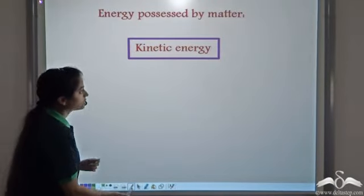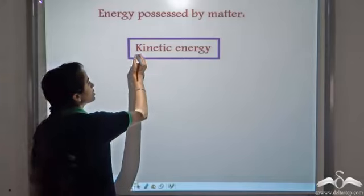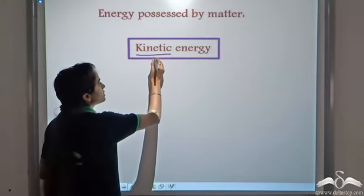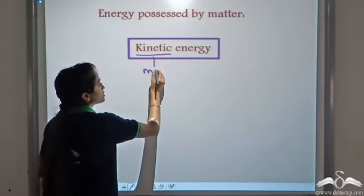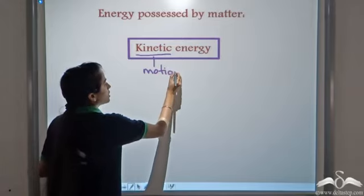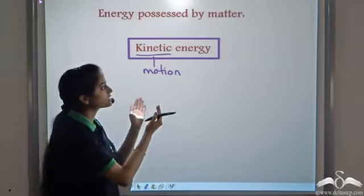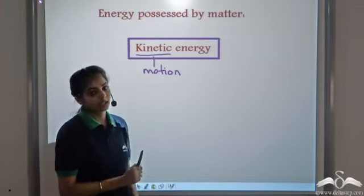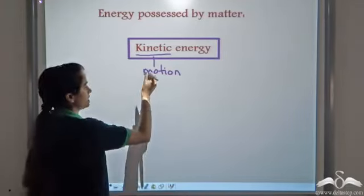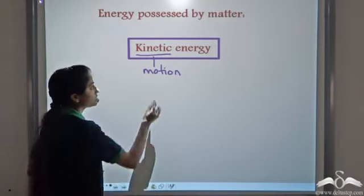Energy possessed by matter due to its state of motion is known as kinetic energy. This is because a particle or a body is in a state of motion. So whenever any body is in a state of motion, it possesses kinetic energy and this kinetic energy is related to speed.